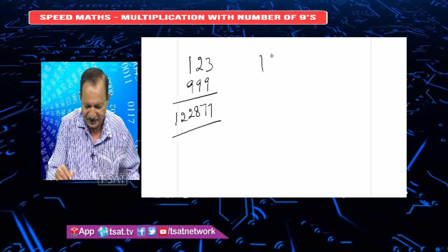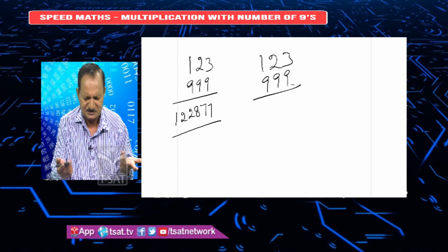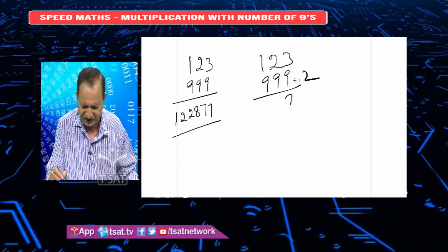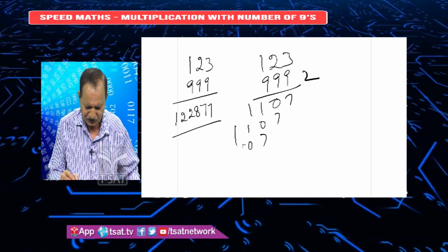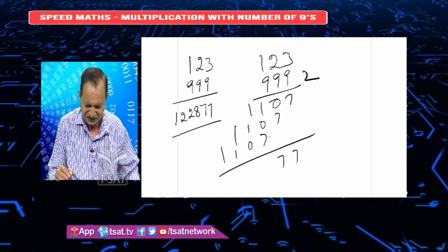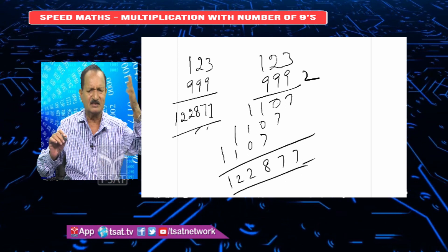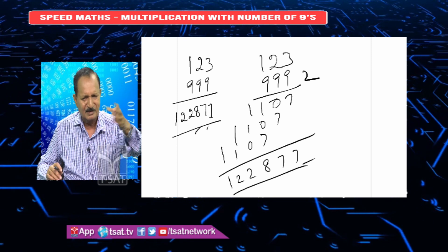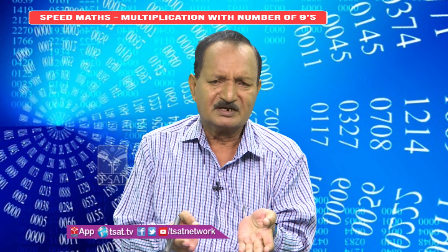Now let us prove it by general multiplication. 9 threes are 27, 9 twos are 18 plus 2 is 20, 9 ones plus 2 is 11. Adding up the columns: we get 1, 2, 2, 8, 7, 7. According to Speed Math we got 122877, and by traditional multiplication we also got 122877. This is the proof. You take 100 numbers, multiply with 100 nines, subtract 1 from the top number, subtract all from 9 and last from 10 — you simply get the answer. Thank you.